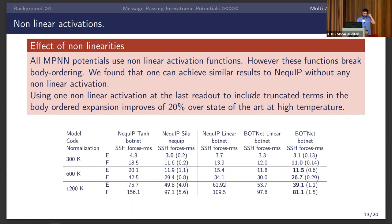We probed the role of non-linearities. Most MPNNs use non-linearities, but Botnet does not, in order to conserve body ordering. We showed that removing non-linearities can still give very good performance — reaching the same accuracy as NEQUIP without a single pointwise non-linearity, except for the tensor product coupling. This means the tensor product, not pointwise non-linearities, is what matters. Adding just one non-linearity at the final readout to account for truncated expansion terms yields an extra 20% improvement over NEQUIP.